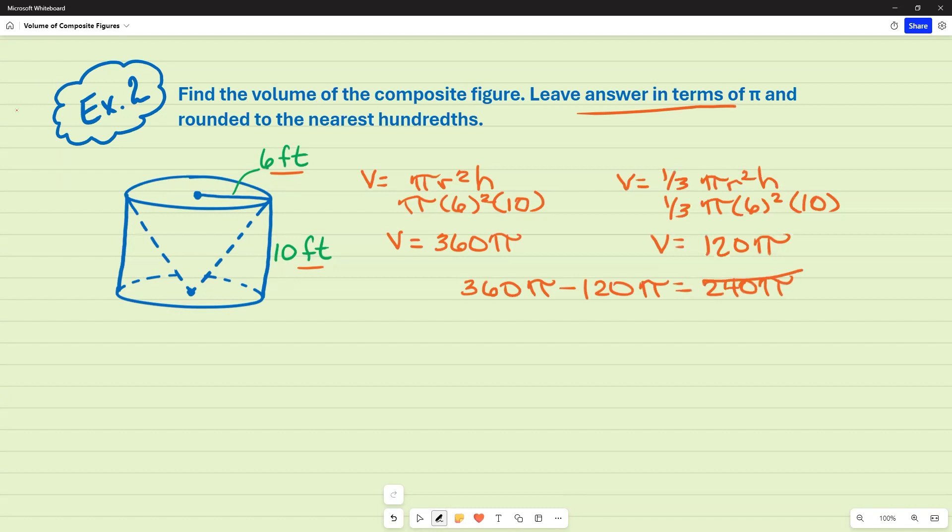And then the other one is to round it to the nearest hundred. So I'm just going to take this 240 pi, and in my calculator, I'm going to convert it to a decimal, which is 753.98 cubic feet.